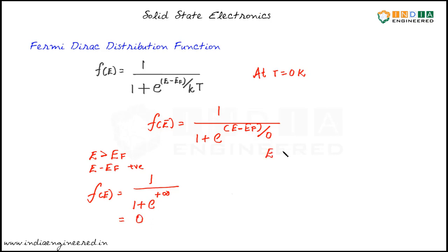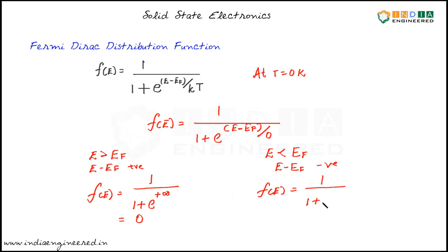Now let's consider energy levels which are below the Fermi level. If E is less than Ef, then E minus Ef is negative. So f(E) will be equal to 1 divided by 1 plus e to the power of minus infinity. Since e to the power of minus infinity equals 1 divided by e to the power of infinity, which is 1 divided by infinity, that equals 0. So f(E) equals 1 divided by 1 plus 0, which is 1.